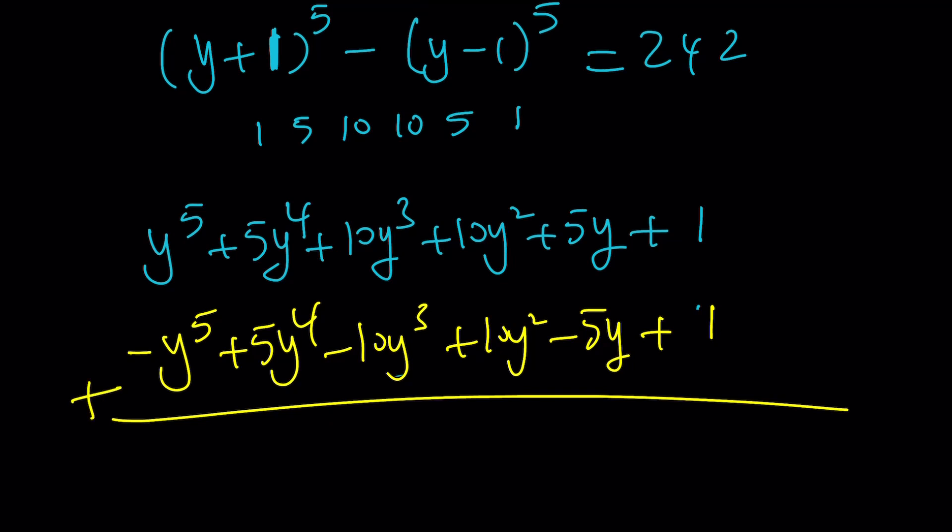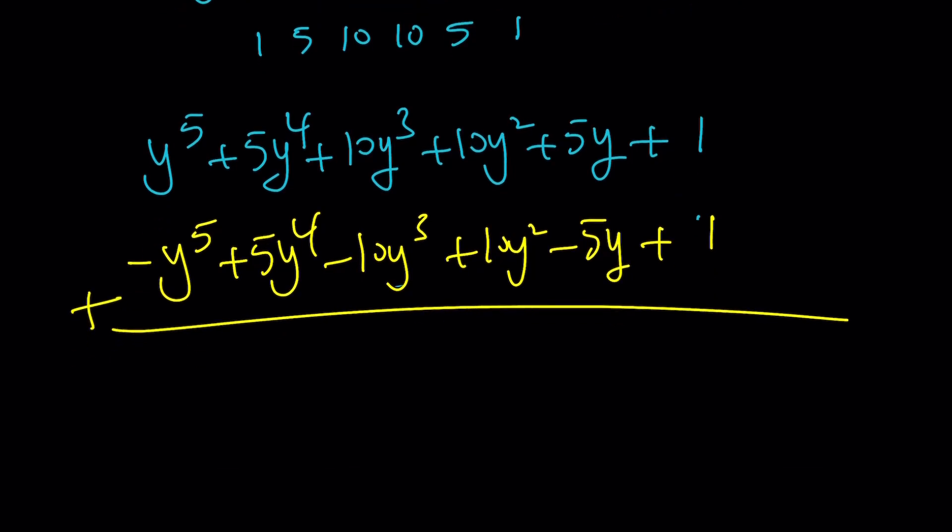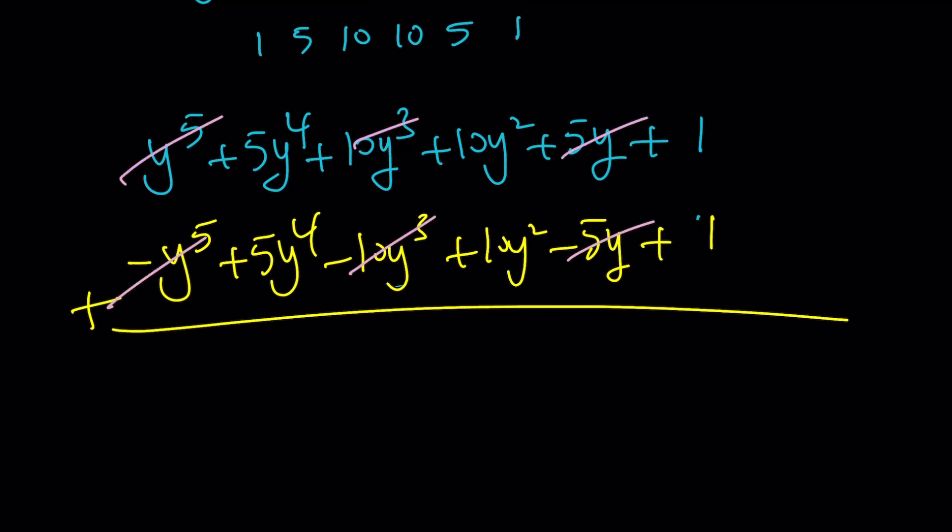And then, of course, then we're going to add these. Right? When you add these two things, you should be getting 242 at the end. Right? These two are going to cancel out. These two are going to cancel out. These two are going to cancel out. All the odd terms are canceling out.